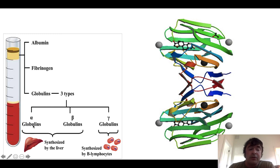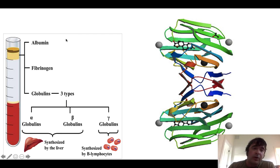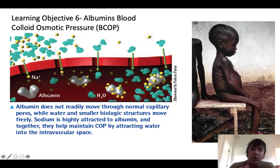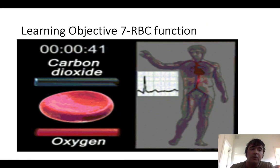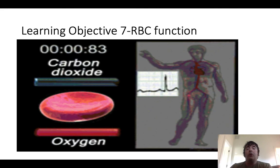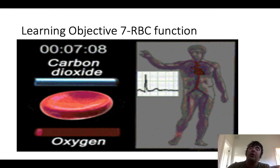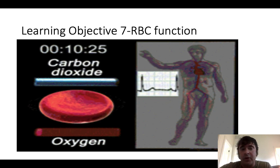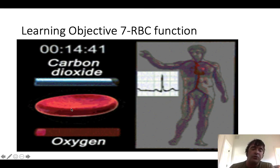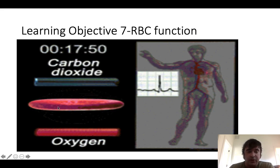Alpha and beta globulins are synthesized by the liver. Fibrinogen will be discussed when we get to the hemostatic pathways. In blood plasma, we have discussed albumins and globulins — covered under learning objective six. Now we shift focus to red blood cell function under learning objective seven.